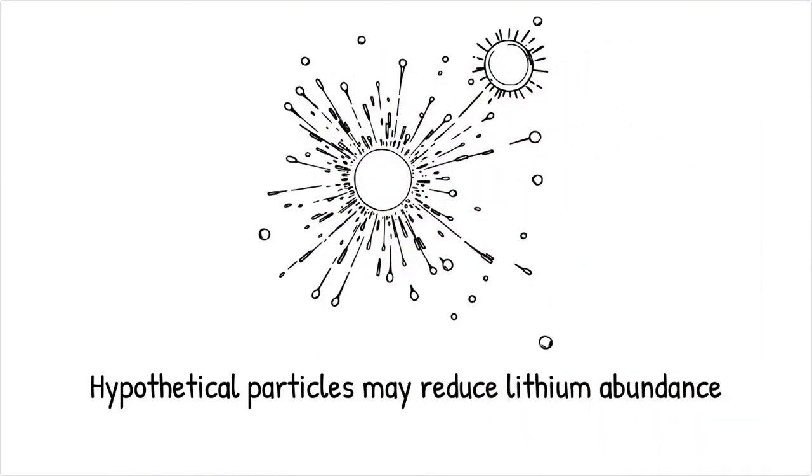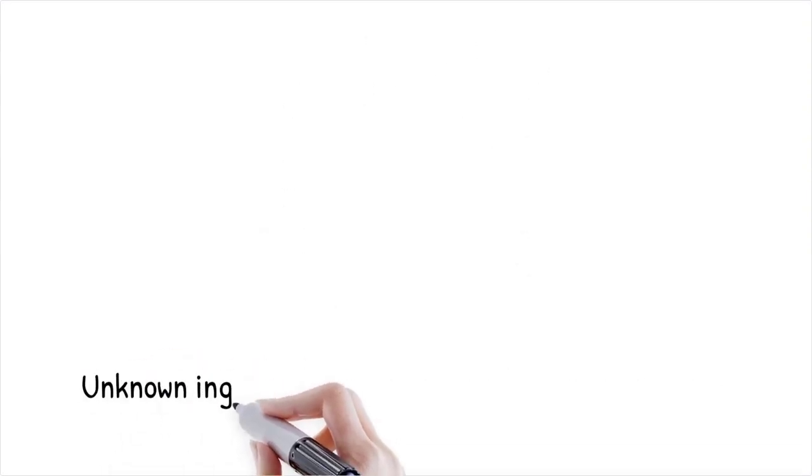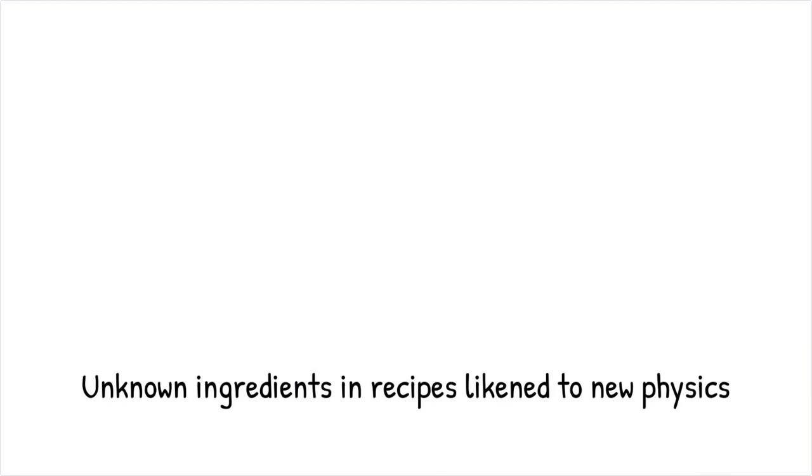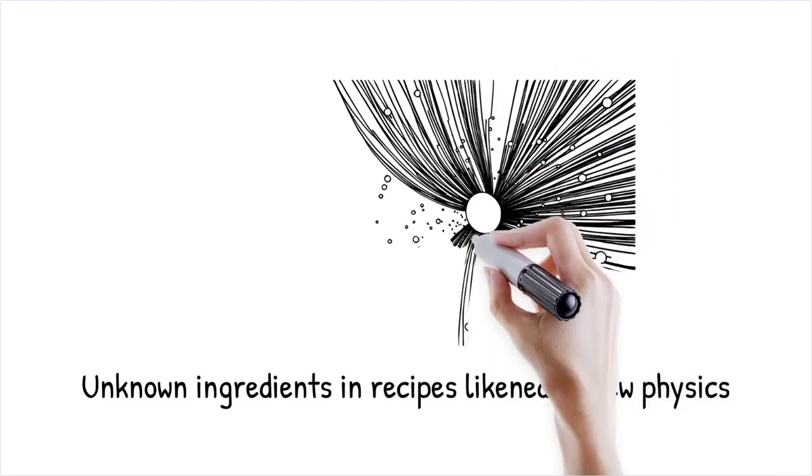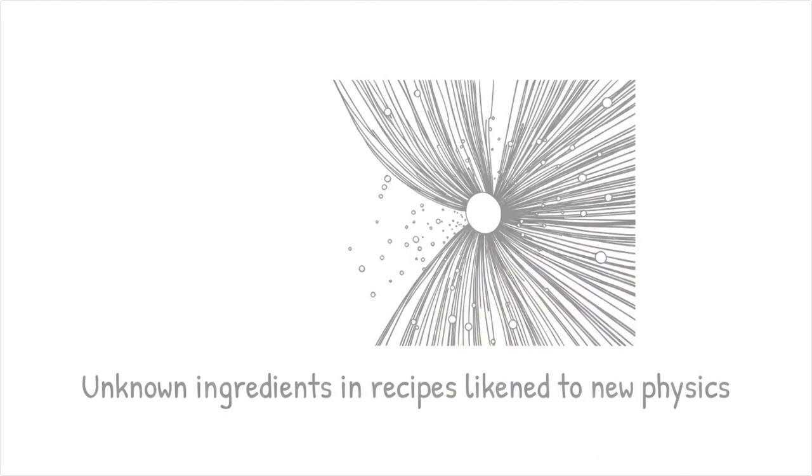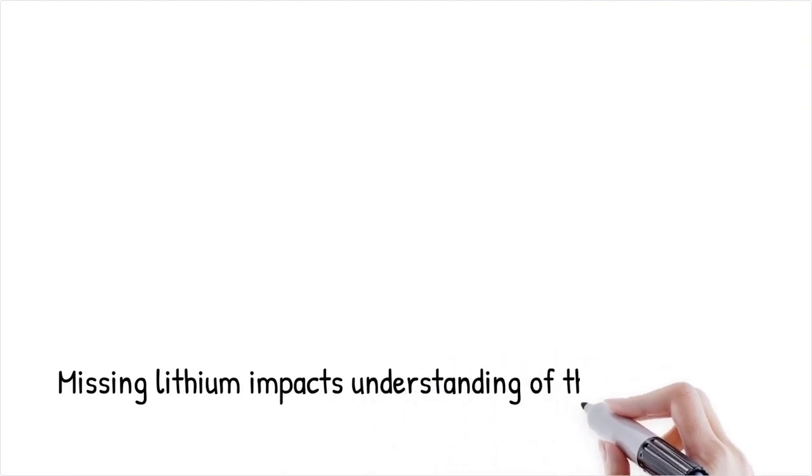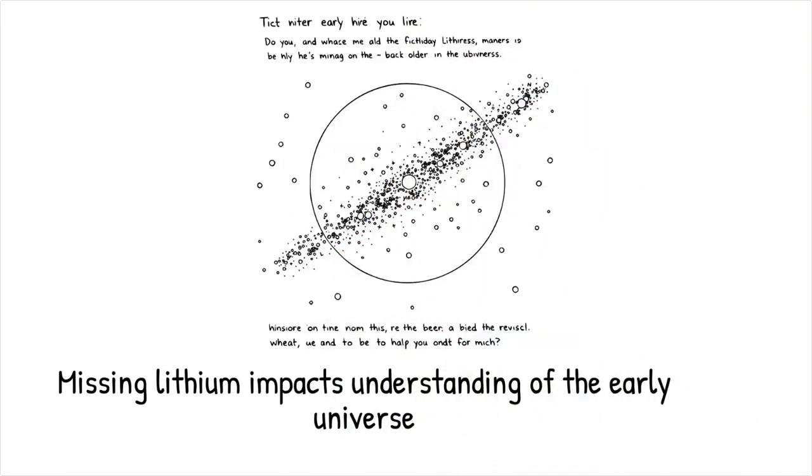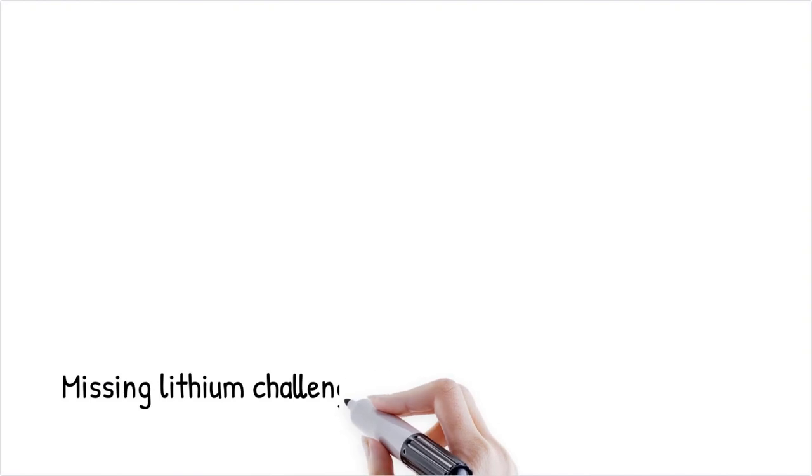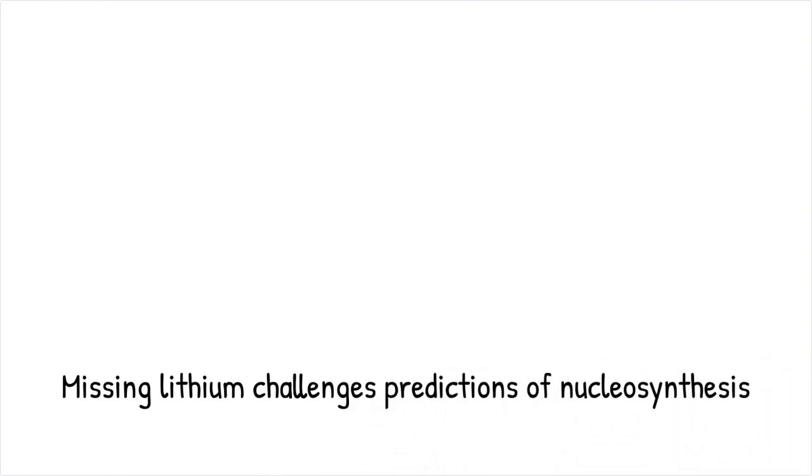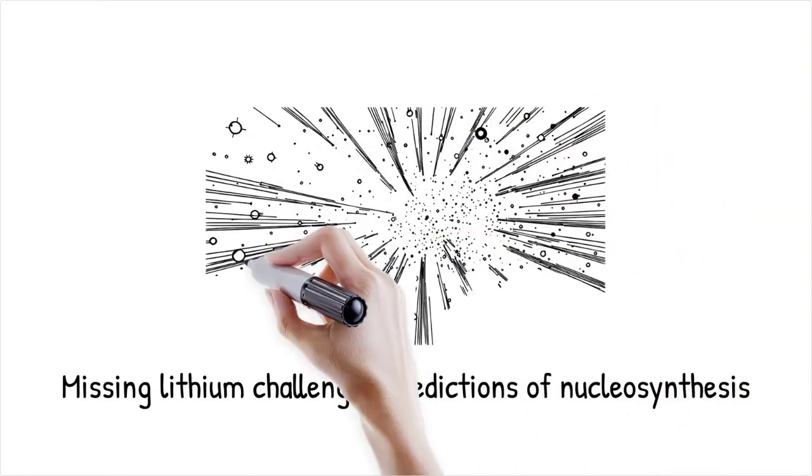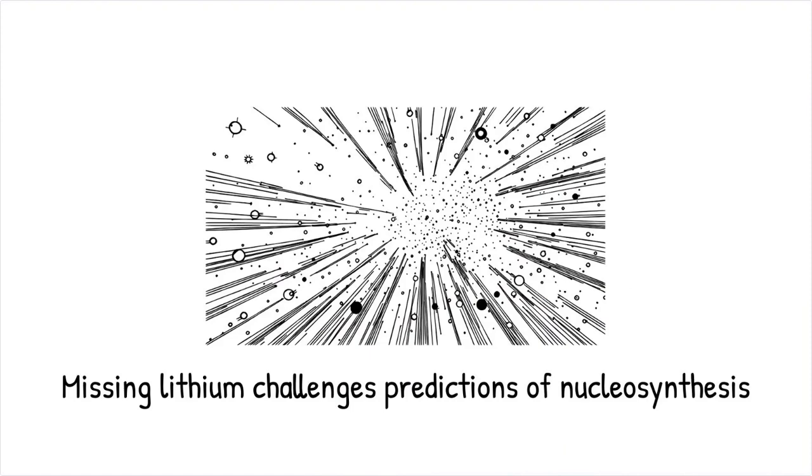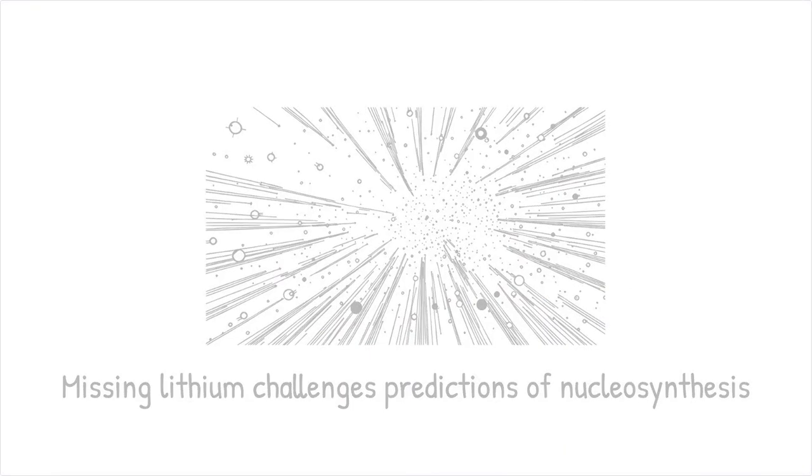The missing lithium problem has significant implications for our understanding of the early universe and the fundamental processes that governed its evolution. If the discrepancy is not due to stellar depletion or observational errors, it may indicate that our cosmological models need revision. This gap challenges the accuracy of our predictions for other elements produced during nucleosynthesis, and resolving this issue is critical for refining our theories of cosmic evolution and the conditions of the early universe. A persistent lithium shortfall may require scientists to reconsider the temperature or density conditions assumed during the first minutes after the Big Bang. It's like noticing that a map of a city is missing an entire neighborhood. You must revise the map to reflect the true layout of the area.